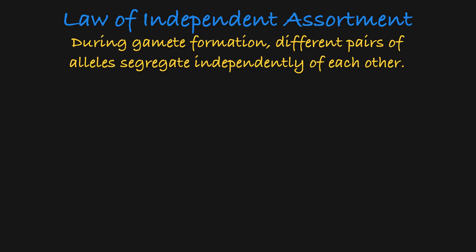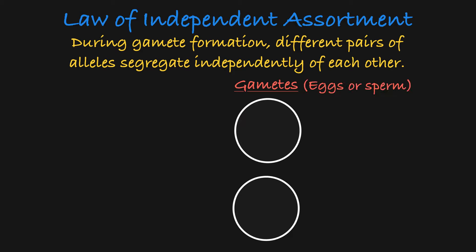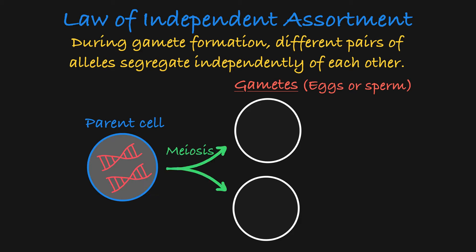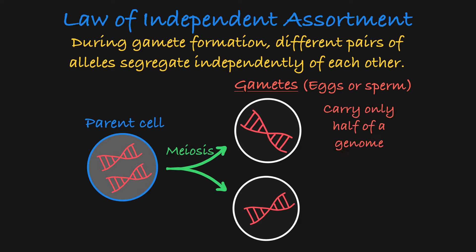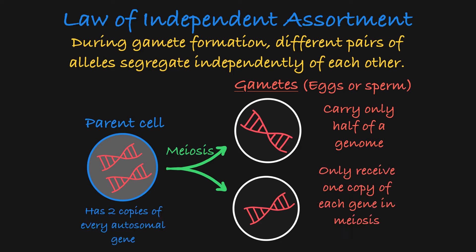Let's break this down to understand it. Gametes are eggs and sperm, which are formed during meiosis. In meiosis, the gametes are given just half of the genome of the parent. Each parent has two copies of every autosomal gene, and they can only give one of the two alleles to each egg or sperm they create.